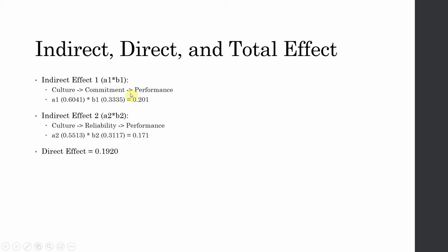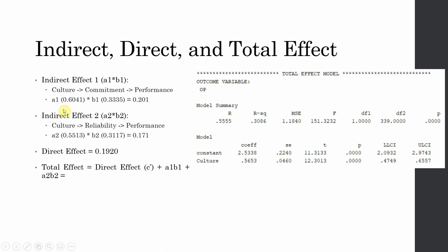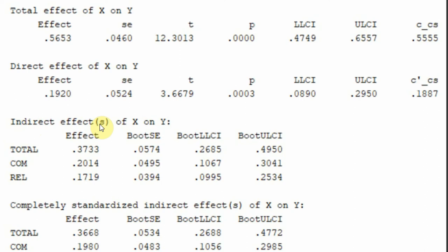The direct effect, c-prime, is the impact of culture on performance in the presence of the mediators. The total effect is simply the direct effect plus the two indirect effects. The total effect equals 0.5653, which you can verify by adding the components together.